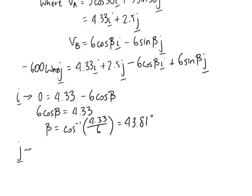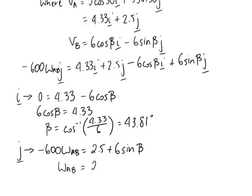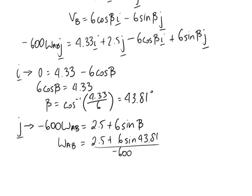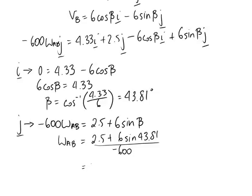So what I really want to find is omega AB, and we know that that's tied up in the j components. So taking out everything with j's, I get that. And we just need to rearrange for omega AB and substitute in the angle that we just worked out. So omega AB is going to be equal to 2.5 plus 6 sin 43.81, and then we need to divide by negative 600. And our answer comes out to be negative 11.1 radians per second.